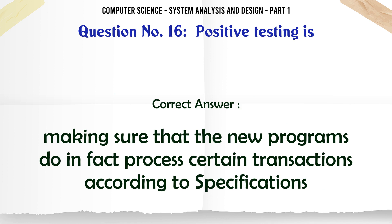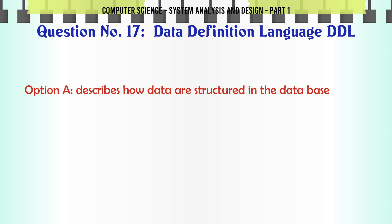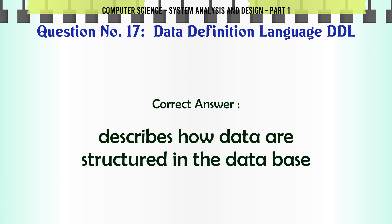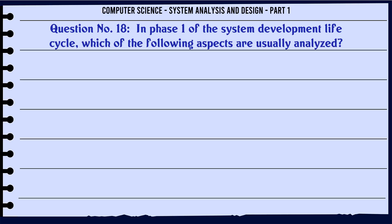Data Definition Language (DDL): A. Describes how data are structured in the database. B. Specifies for the DBMS what is required and the techniques used to process data. C. Determines how data must be structured to produce the user's view. D. All of the above. The correct answer is: Describes how data are structured in the database.